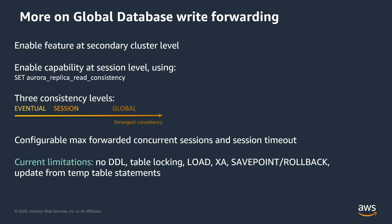The write forwarding feature needs to be enabled at the secondary cluster level. You can do this while creating your global cluster or after the fact — you can enable it anytime. To use this capability, in addition to enabling the feature, you also have to use the session-level parameter Aurora replica read consistency. This parameter has multiple values: you can set it to eventual, session, or global, and you must set it to one of these values to actually do writes on the secondary region.